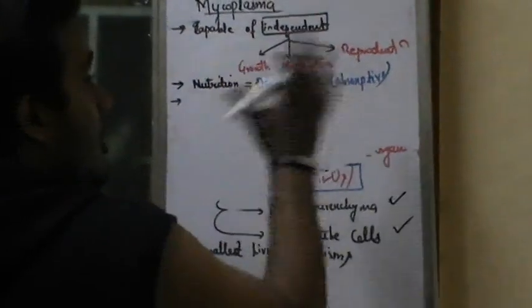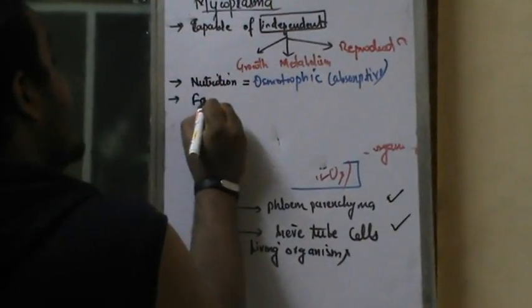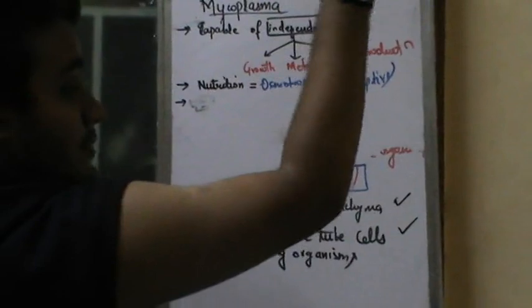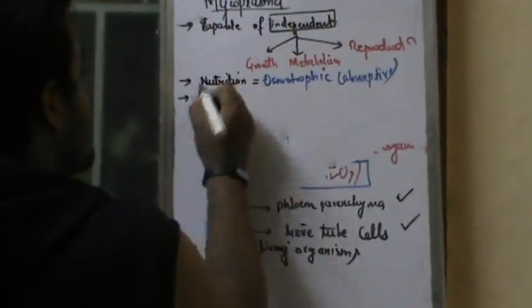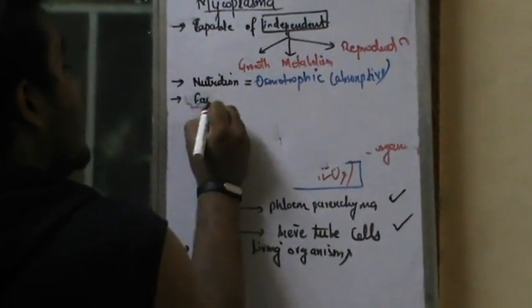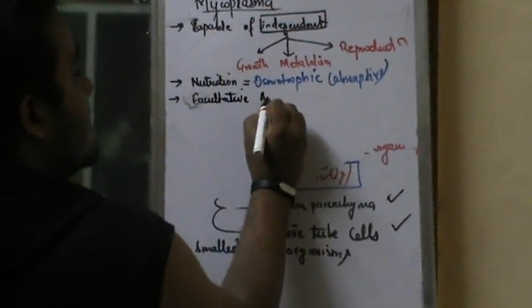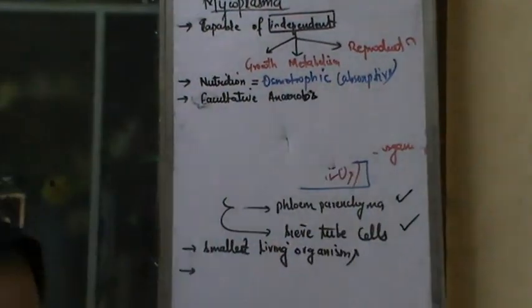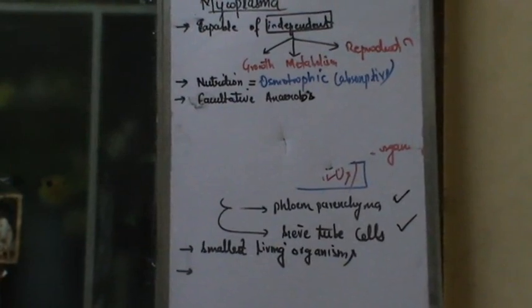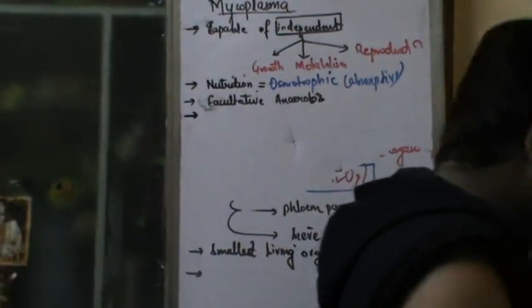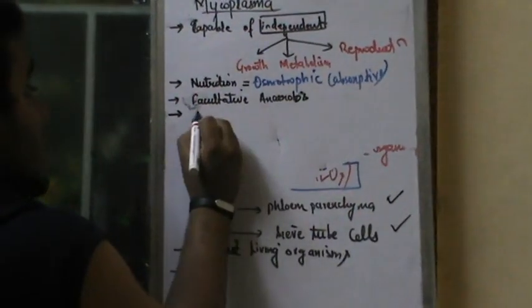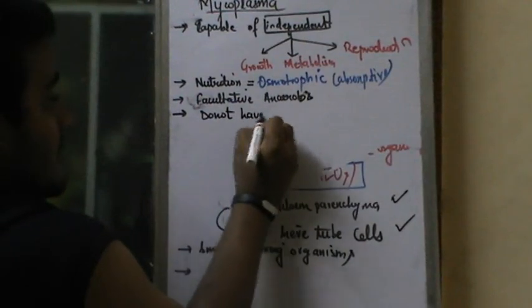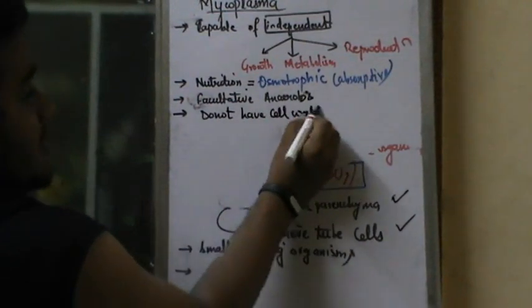All mycoplasma are going to be facultative anaerobes — very, very important points. NCERT example. Mycoplasma cause disease to both plants and animals. Remember — they do not have a cell wall. This is a very important point for assertion and reasoning questions.